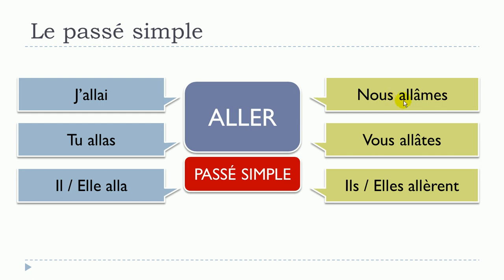Then nous allâmes — remember that you should make this little link between the two: nous allâmes. Vous allâtes — same thing, la liaison. So the final S here is not pronounced. Ils allèrent — liaison. Elles allèrent. And then this -ent at the end, unmarked for the plural, you clearly don't pronounce it, so you get allèrent.